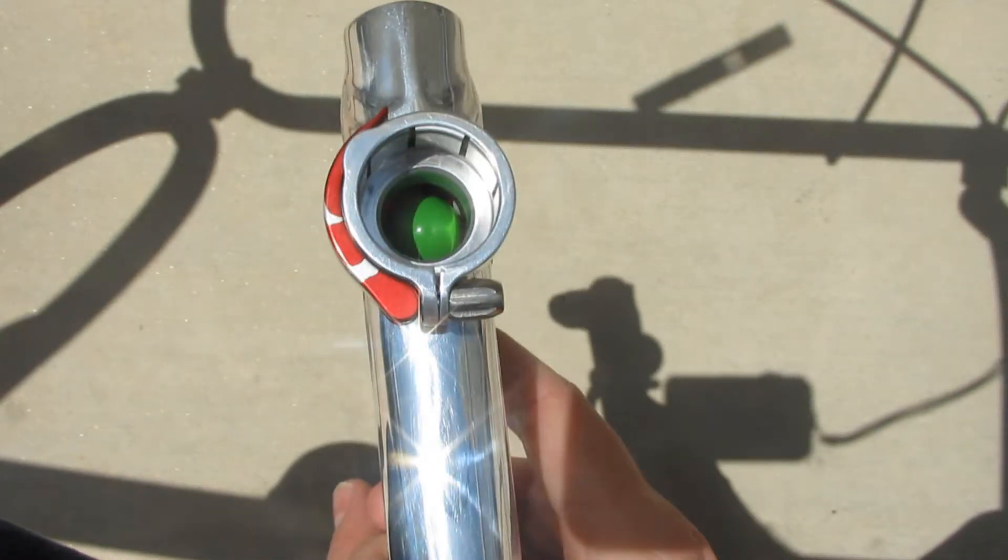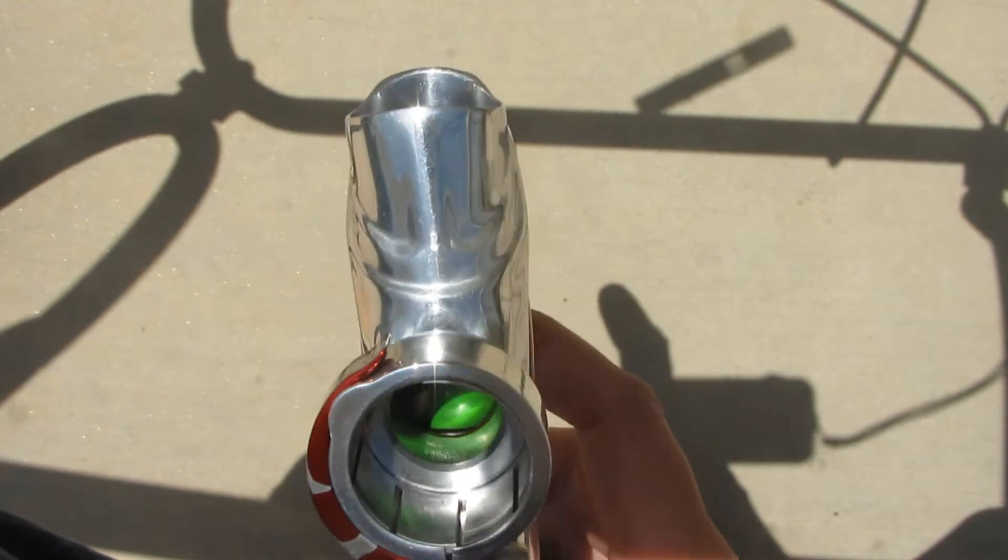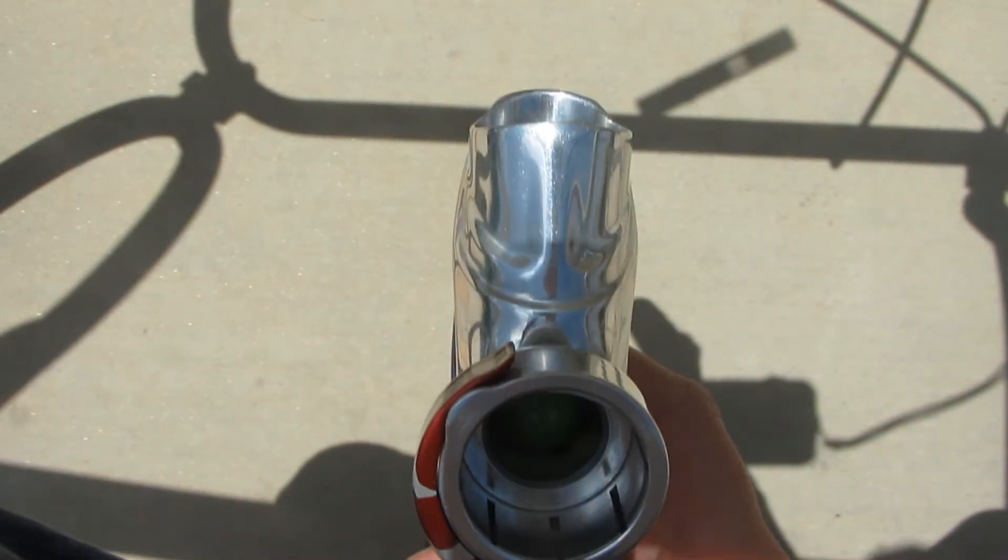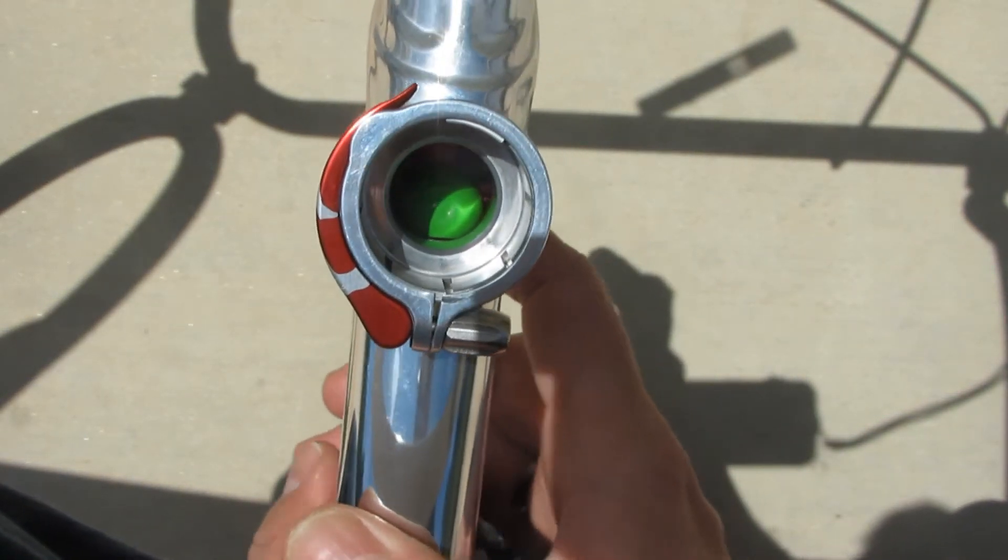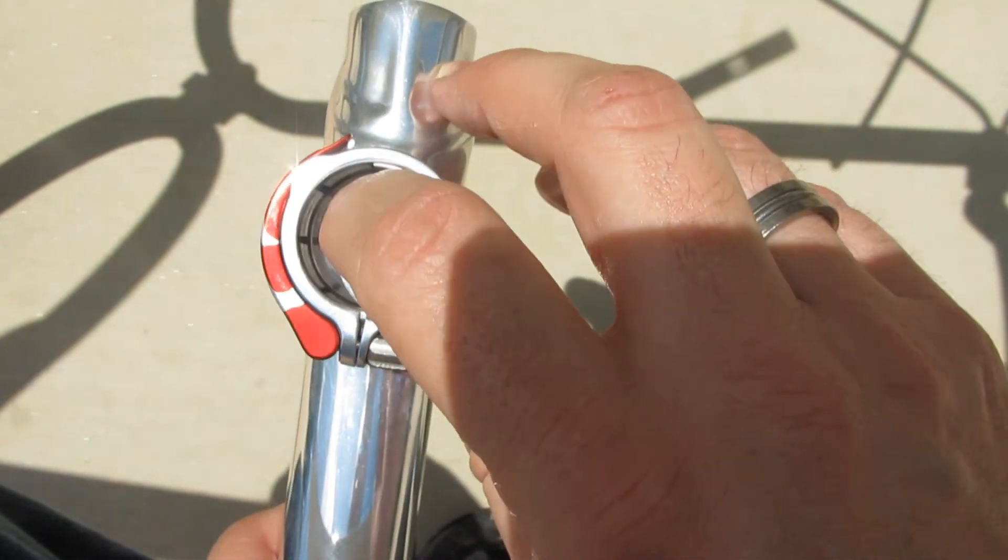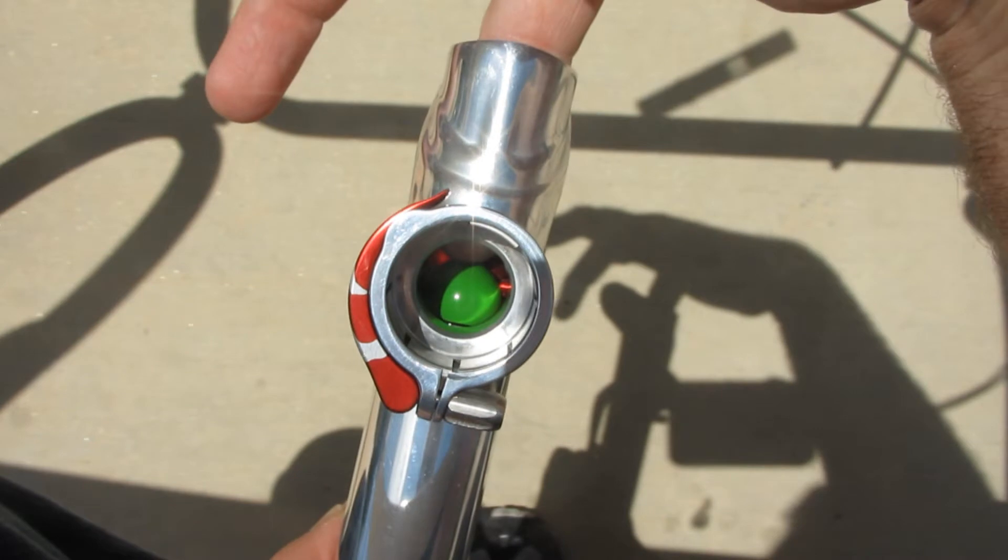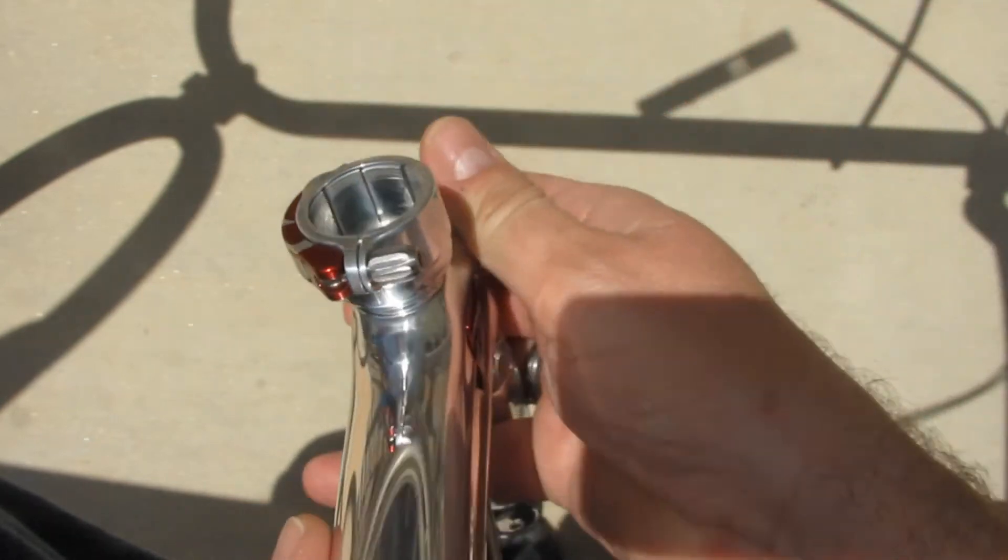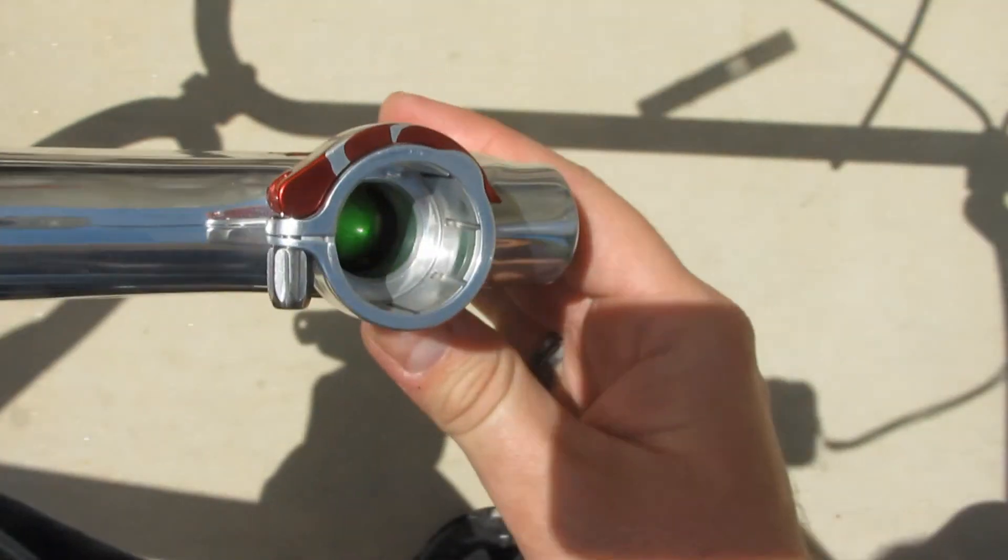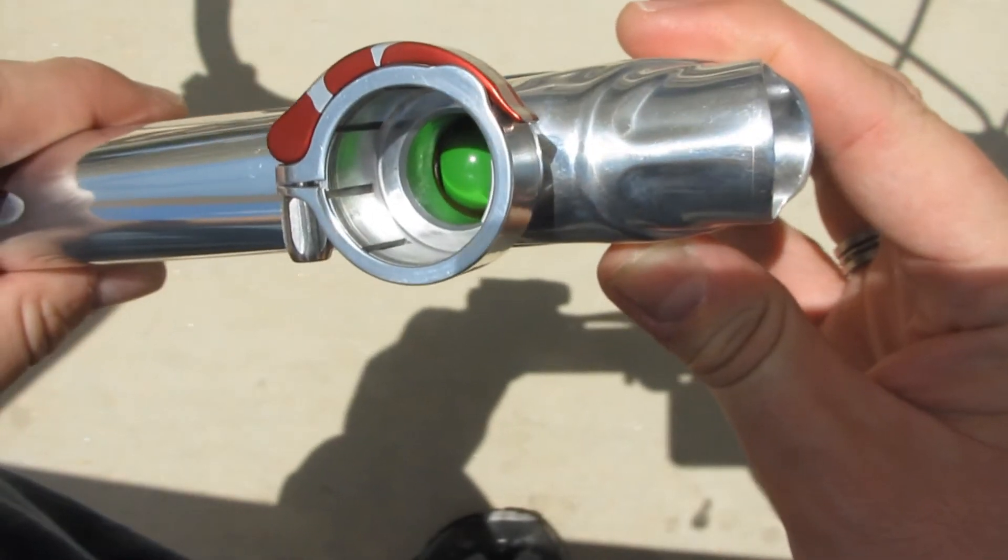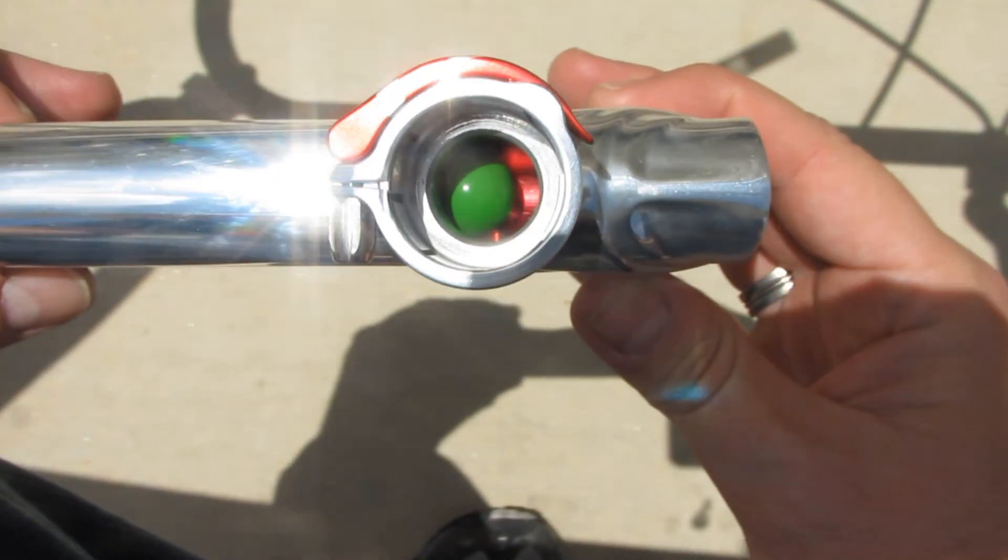Now, you can see. See how the ball's hitting? There's my finger in the breech. It's kind of hard to see. There you go. That's a better view.